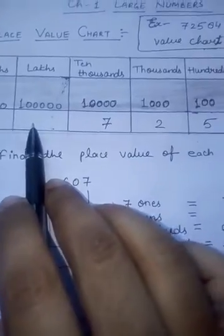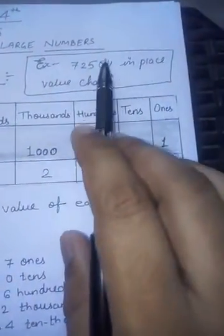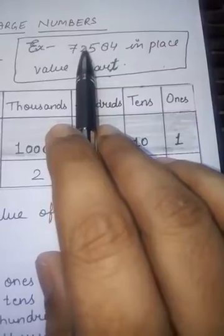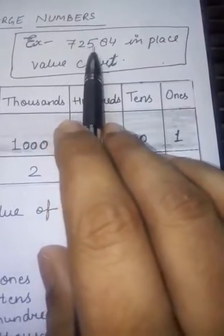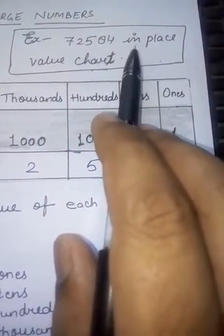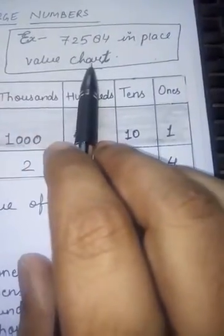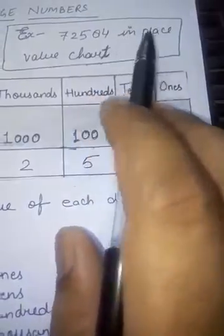Based on this, the first question is an example: the digits 7, 2, 5, 8, 4. Show seventy-two thousand five hundred eighty-four in the place value chart.